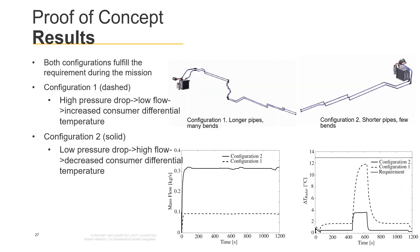Here you can see some of the simulation results. The results of configuration 1, the longer routing, are shown as dashed, whereas configuration 2 are shown as solid. A longer routing with more bends results in a higher system pressure drop, which results in a lower coolant mass flow, as seen in the left-hand side figure. As a consequence, the difference between the consumer inlet and outlet temperature is significantly higher in the configuration with the longer routing. However, in this example, both configurations fulfill the expressed subsystem requirements.